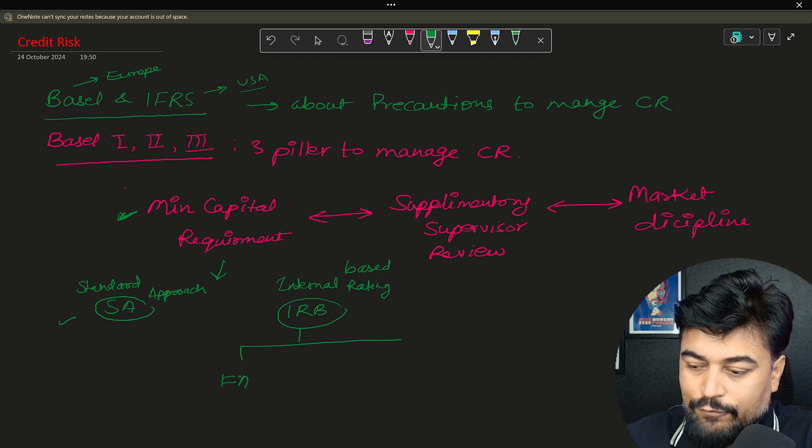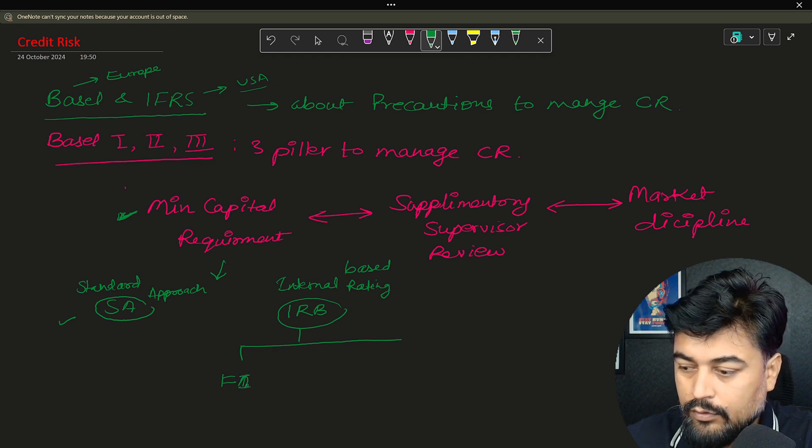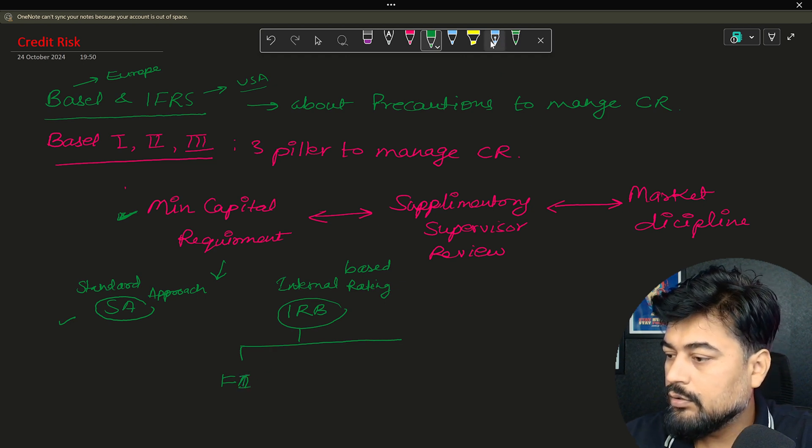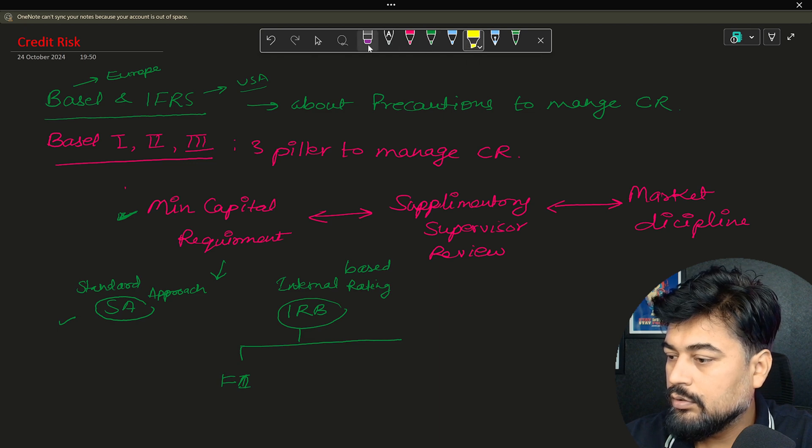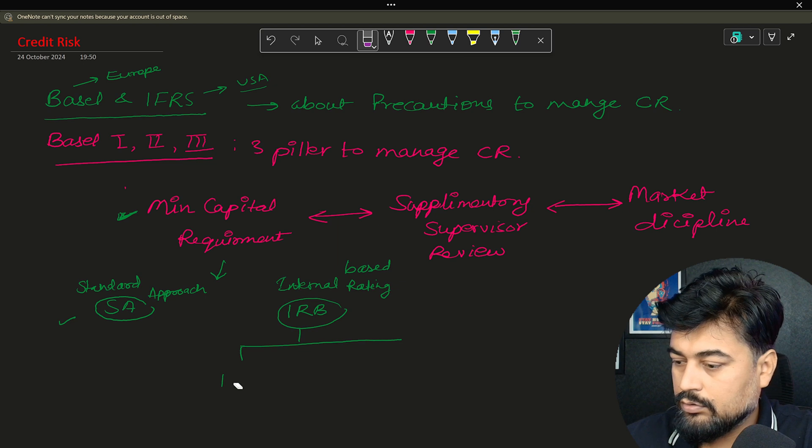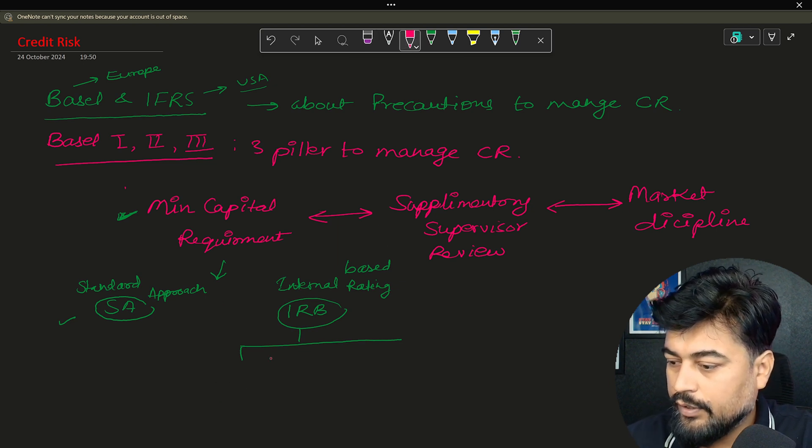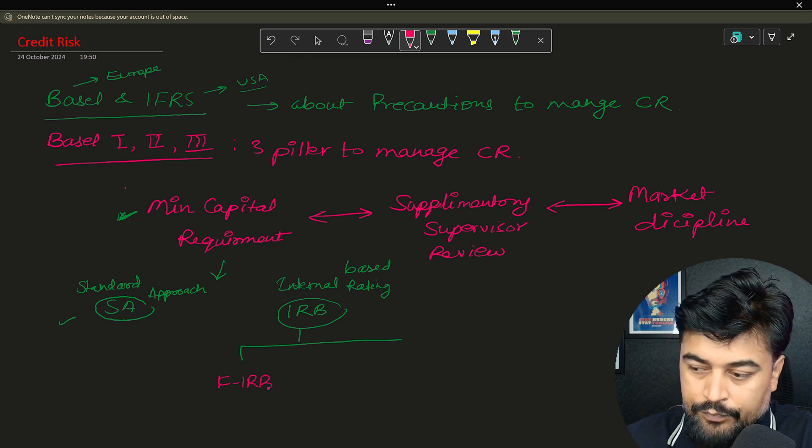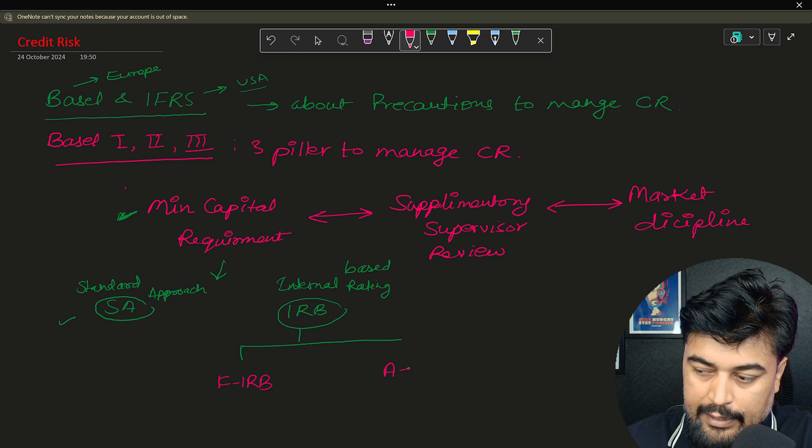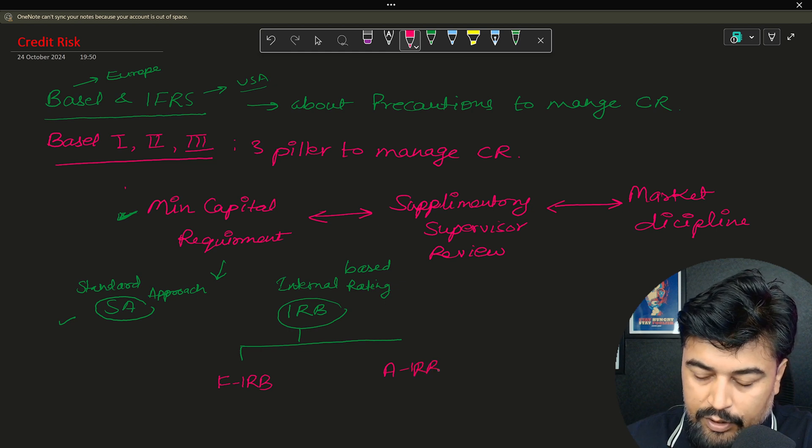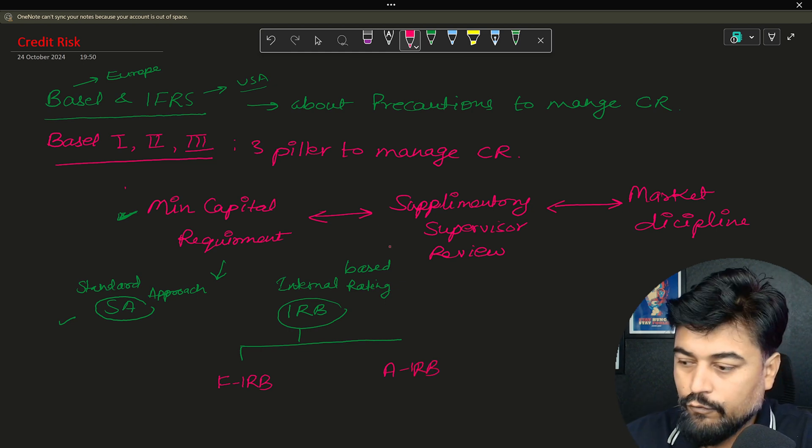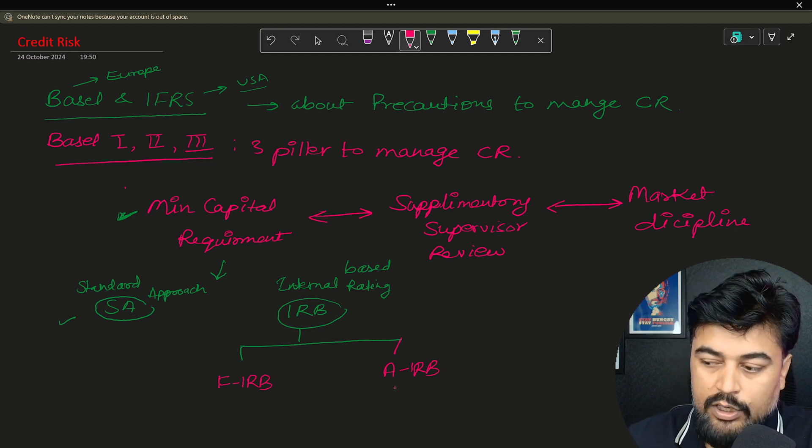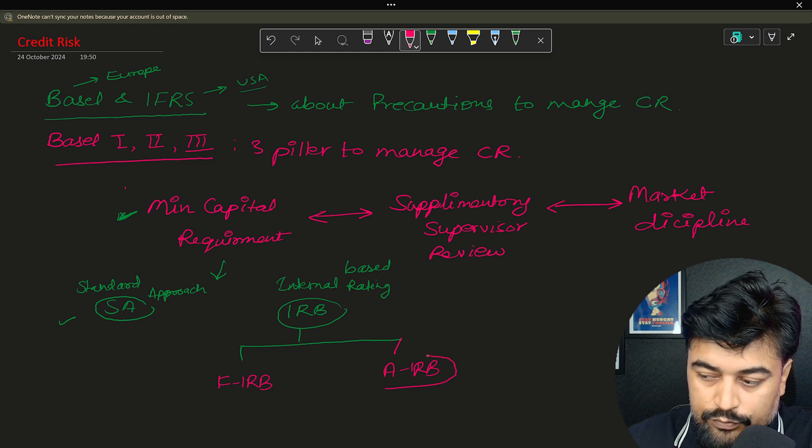Similarly, this IRB approach is internal rating based, which is more dependent on the bank itself. Now this IRB is divided into two parts like F-IRB, so this will be F-IRB, then A-IRB.